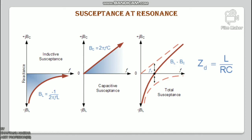At the resonant frequency fr, the current drawn from the supply is in phase with the applied voltage, as effectively only resistance is present in the parallel circuit, so the power factor becomes unity (θ = 0). The impedance of the parallel circuit is dynamic with frequency. The maximum dynamic impedance Zd = L/(RC).